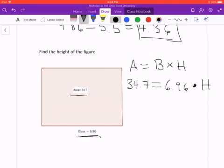Now I'm trying to get this h by itself. We did linear equations a couple weeks ago. So how do I get the h by itself? I'm going to divide by 6.96. Do the same thing over here, 6.96.